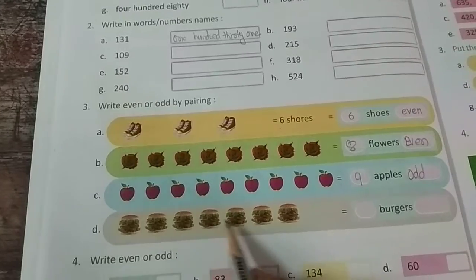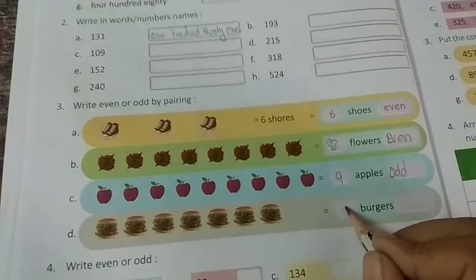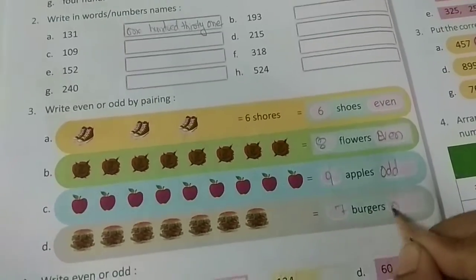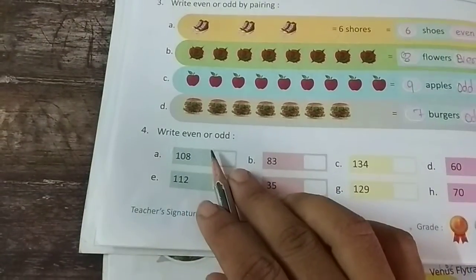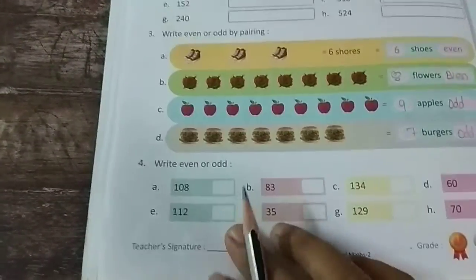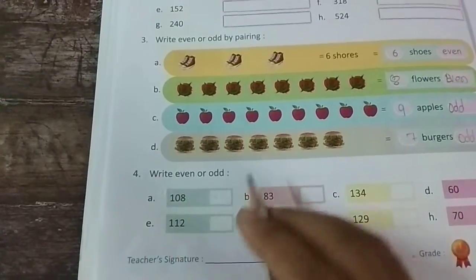One, two, three, four, five, six, seven. So seven, what are odd? We can write odd or even. Odd which is the last one. Even which is the last one.